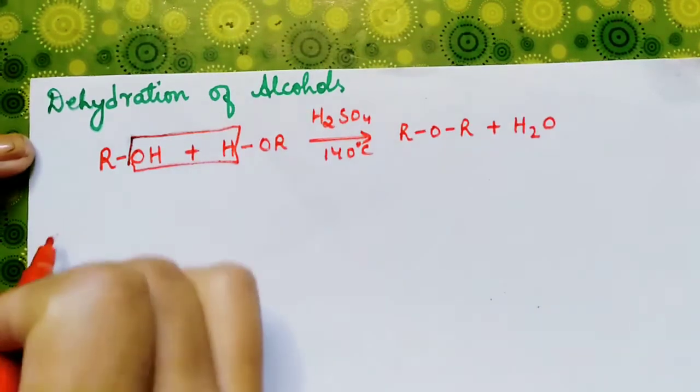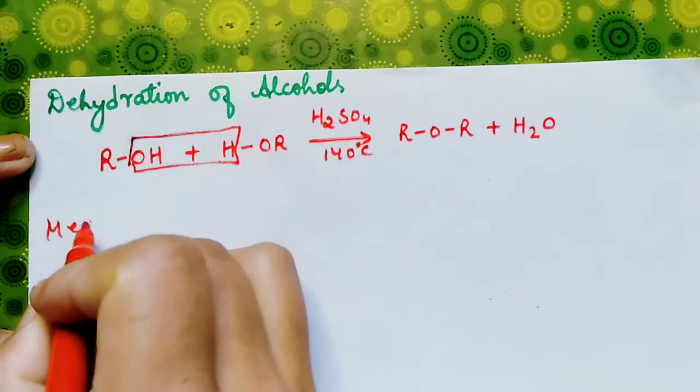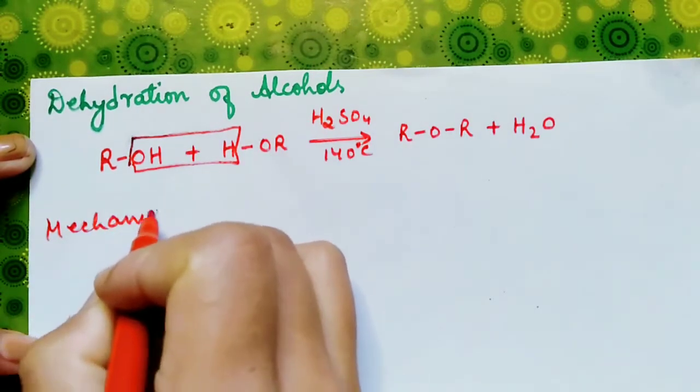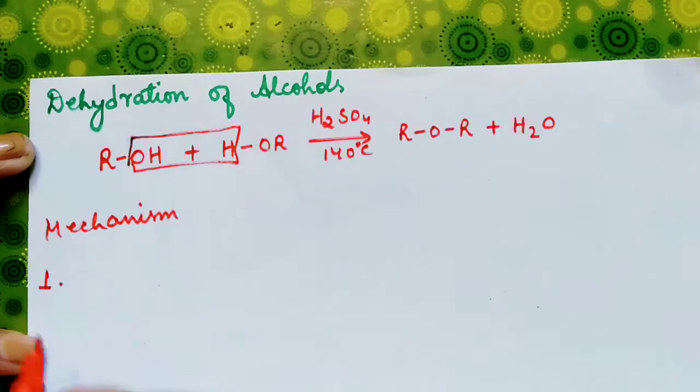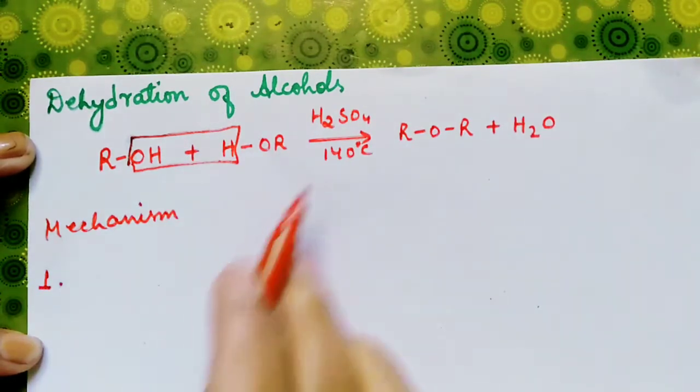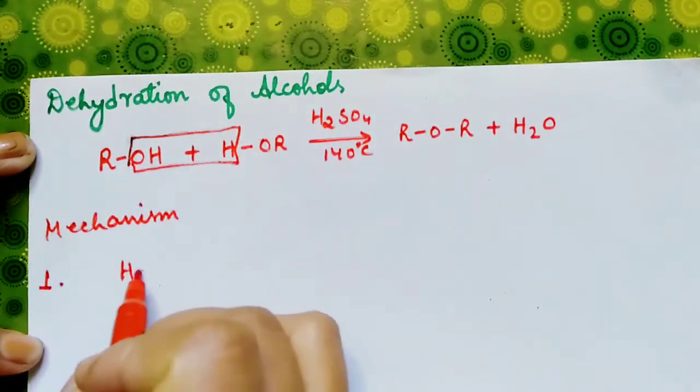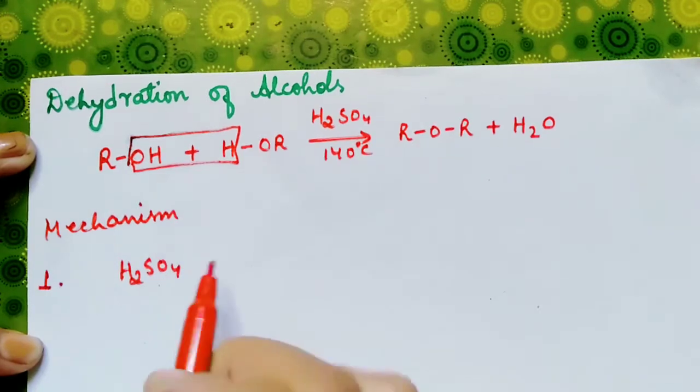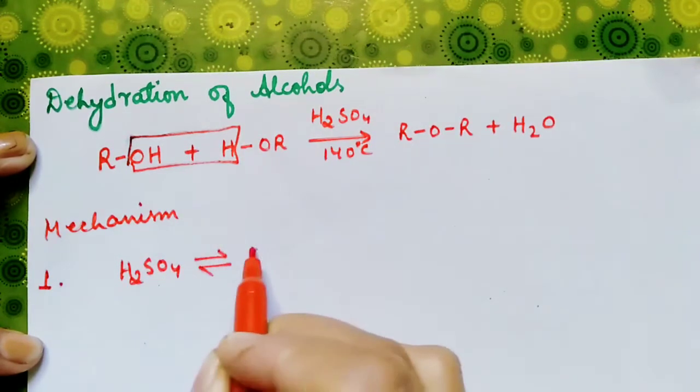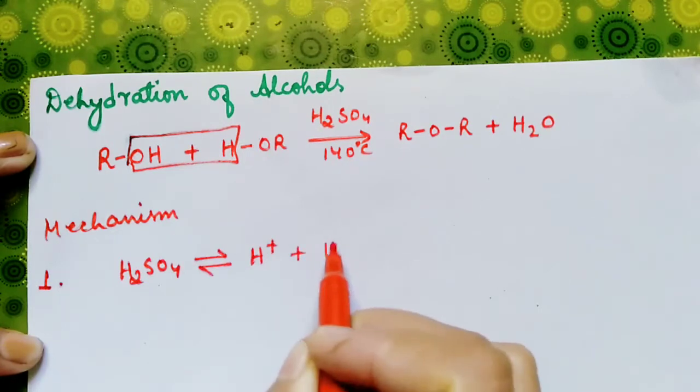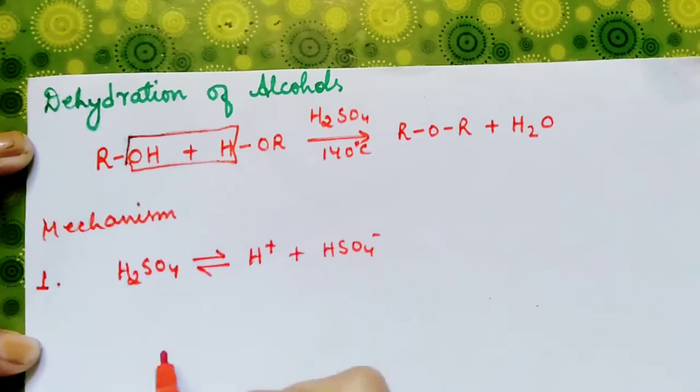Let us have a look at the mechanism of this chemical reaction. In step one, from this sulfuric acid we have H plus and HSO4 minus.